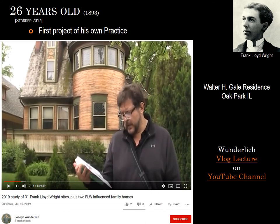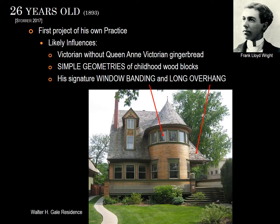Now Frank Lloyd Wright is on his own. His first project of his own practice is the Walter H. Gale residence, also very close — right next to the bootleg houses and down the street from his home and studio. You can see more of this in my video log on YouTube at times 7 and 14. You can see some very unique features of what he'll later be well known for: the simple geometries, the banding of windows you can see in that turret, and also the long overhangs.